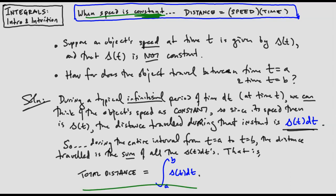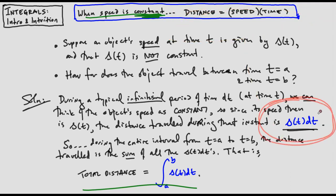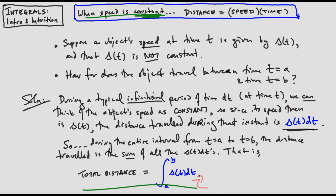Do you see how this is the same spirit that animated our discussion of area? We're taking something unruly—a speed function that is not constant—chopping it up into infinitesimal bits of time. On an infinitesimal slice of time, the speed is constant and everything is easy to analyze. We come up with an expression for the distance traveled in an instant, and then add all of those up for every time in the interval. Same idea, new context: take something complex, disintegrate it into simple pieces, analyze the pieces, reintegrate to recapture the whole.